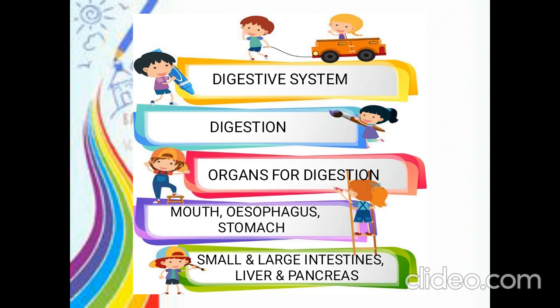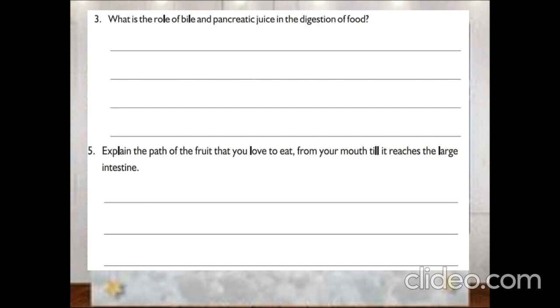The remaining undigested food will be sent to large intestine. In large intestine, the remaining water will be reabsorbed, and the solid waste is sent as feces through anus. Liver and pancreas play an important role. Liver filters harmful substances from blood and produces bile juice, whereas pancreas helps in the production of pancreatic juice which digests carbohydrates, fats and proteins in our food.